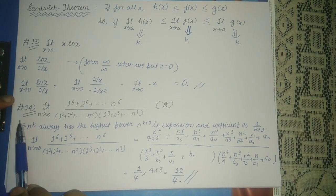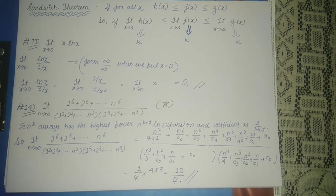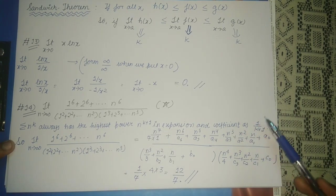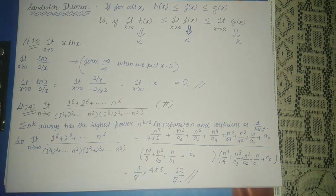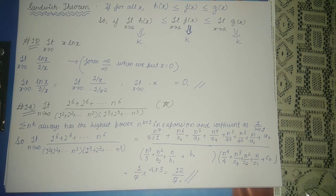Now we need to evaluate: limit n tending to infinity of (1⁶ + 2⁶ + ... + n⁶) / [(1² + 2² + ... + n²) · (1³ + 2³ + ... + n³)]. It must be noted that Σnᵏ always has highest power n^(k+1) with coefficient 1/(k+1). So the numerator has highest power n⁷ with coefficient 1/7. In the denominator, the sum of squares has highest power n³ with coefficient 1/3, and the sum of cubes has highest power n⁴ with coefficient 1/4. Thus n⁷ = n³ · n⁴, the n⁷ terms cancel, and the limit equals 1 · (3 · 4) / 7 = 12/7.